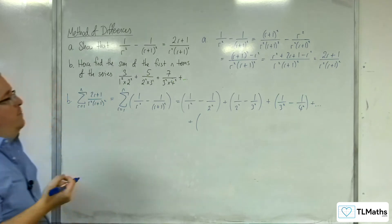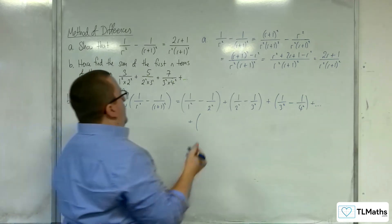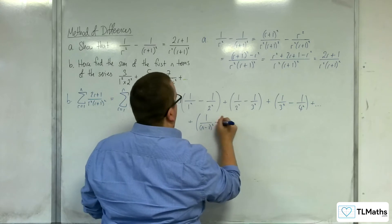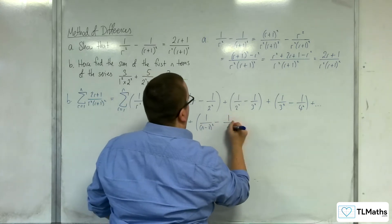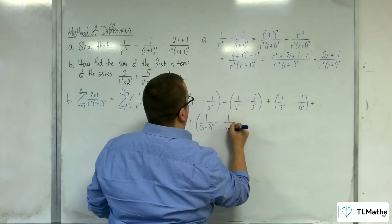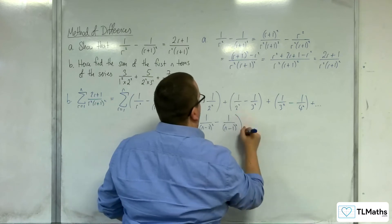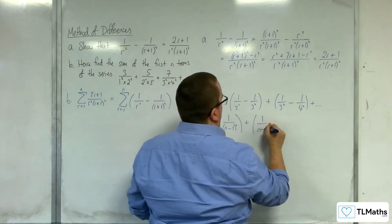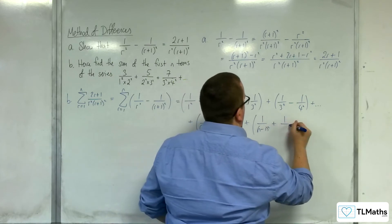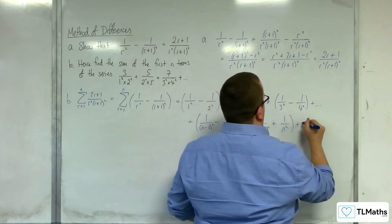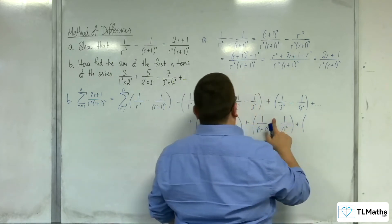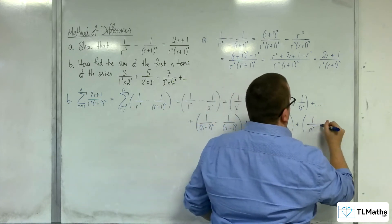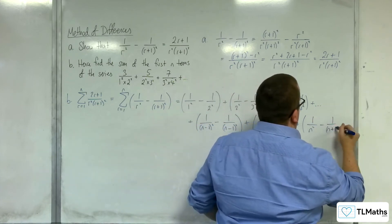Substituting in r equals n minus 2, we get 1 over n minus 2 squared take away 1 over n minus 1 squared. Then plus 1 over n minus 1 squared take away 1 over n squared. And finally plus 1 over n squared take away 1 over n plus 1 squared.